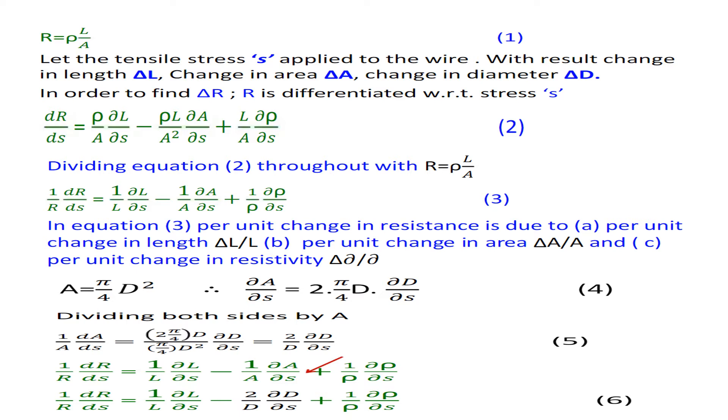Now we are deriving here the stress-strain of the strain gauge. Let the tensile stress σ apply to the wire with result change in length ΔL, change in area ΔA, change in diameter Δd. In order to find ΔR, R is differentiated with respect to stress σ. So we get dR/dσ = ρ/A dL/dσ - ρL/A² dA/dσ + L/A dρ/dσ.